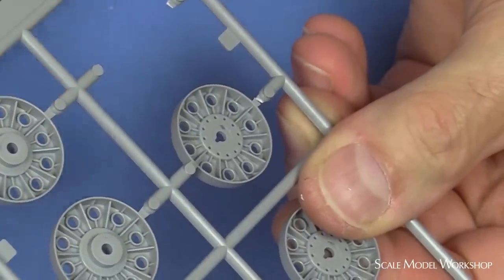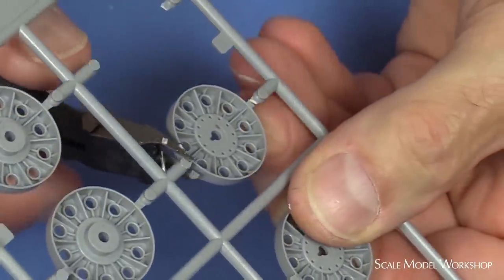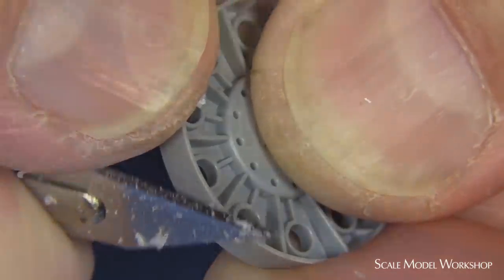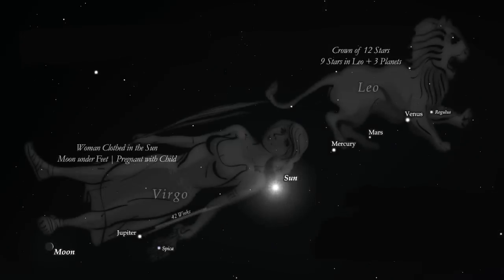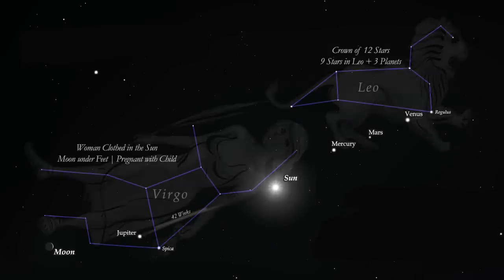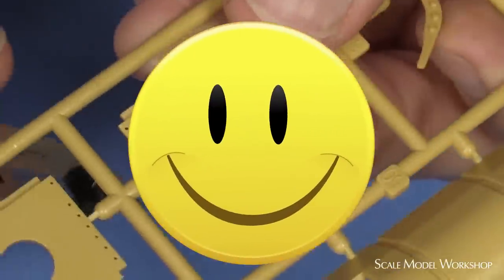Unless the attachment between the part and the sprue or gate is designed in a conscientious manner, we're going to need to spend some quality time with a blade, file, or abrasive. However, on those occasions when the stars align perfectly, a good pair of plastic nippers can make removing a part off the sprue a much more pleasant experience.